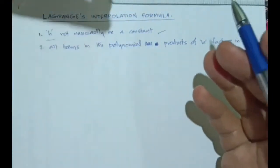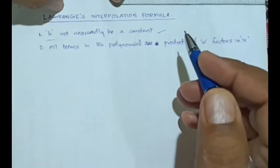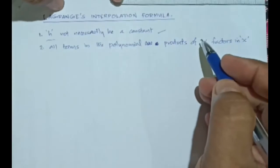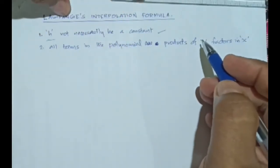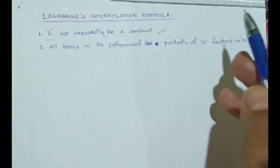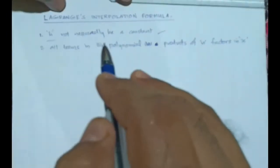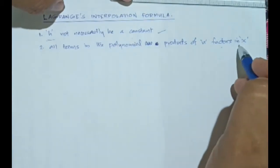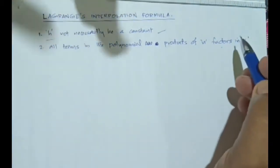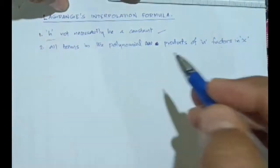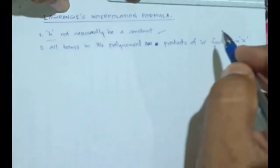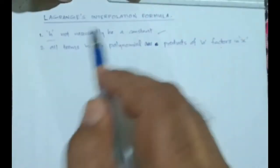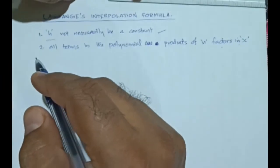One more speciality of Lagrange's interpolation formula is that in this method we will have a polynomial, and the polynomial will have n terms. Each term of this particular polynomial will have n factors in x — in other words, each term in this polynomial of degree n will itself be a polynomial of degree n. That is a speciality of Lagrange's interpolation formula.